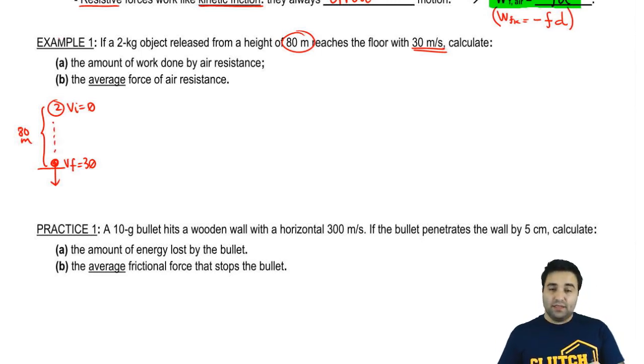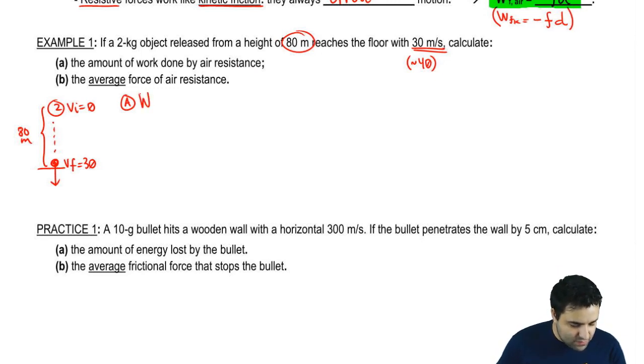Now if you want to calculate this using the energy equation, you would see that objects released from 80 in the absence of air resistance will actually get to the bottom with about 40 meters per second. But this one is getting there a little slower, and that's because there's some air resistance. And it says, what is the amount of work done by air resistance?